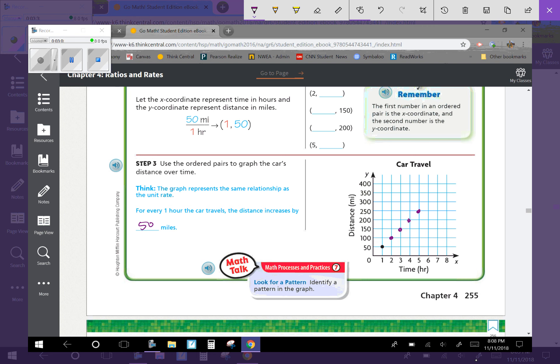If this continues to increase at the same rate, then 6 would be 300, 7 would be 350, 8 would be 400. So that would be what that graph looks like.